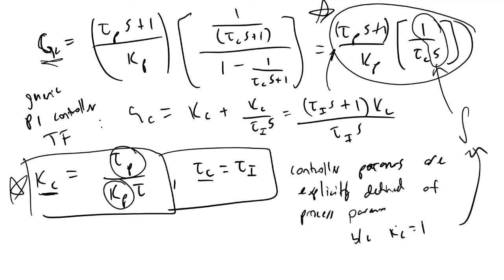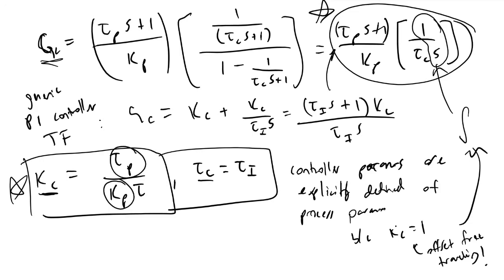And offset free tracking is a good thing because we want our output to eventually reach and stay at our demanded set point value. And so this wraps up a basic overview of the direct synthesis model for designing PID controllers.